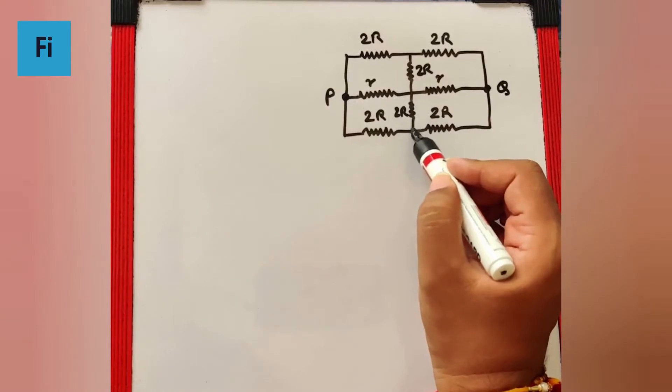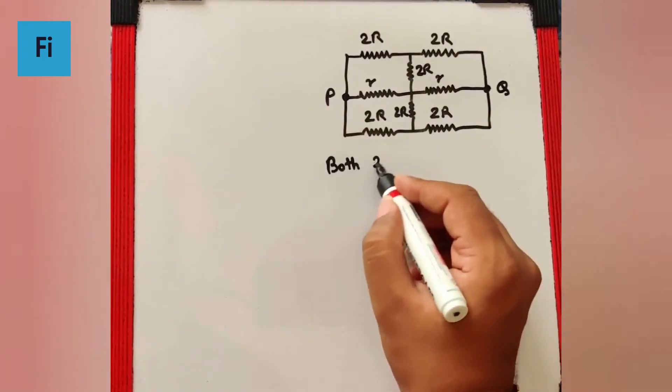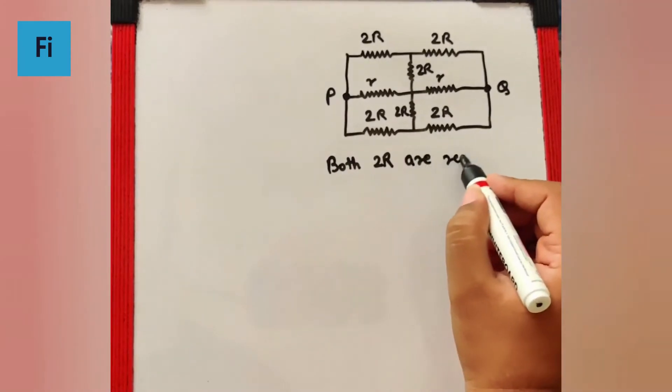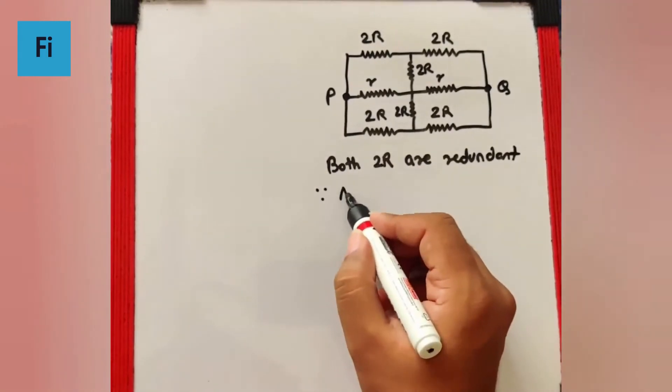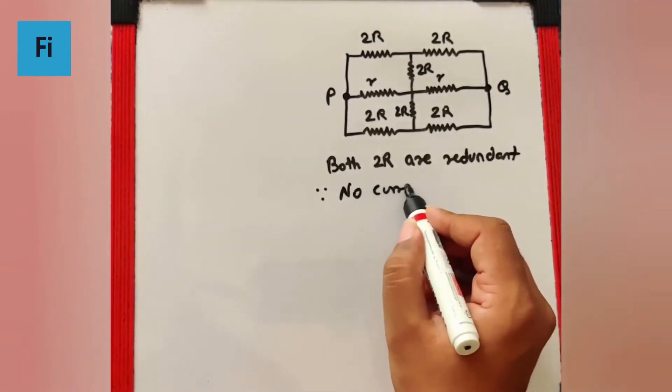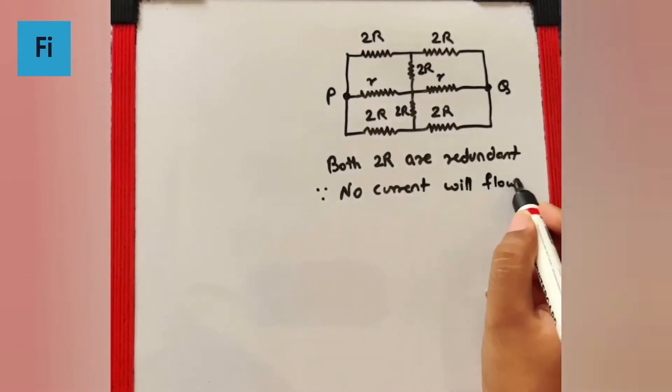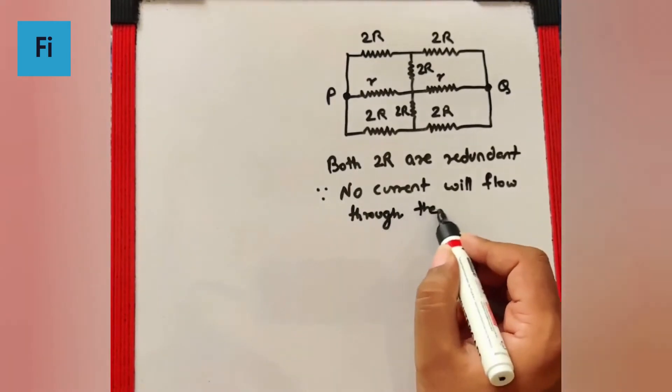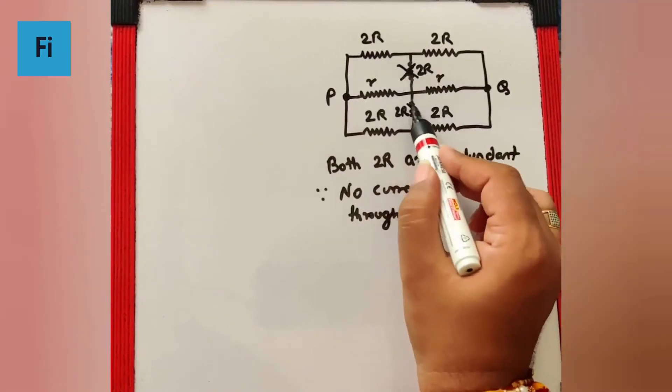So this is also going to be redundant. So I can say both 2R are redundant since no current will flow through them. Okay, so this is out and this is out.